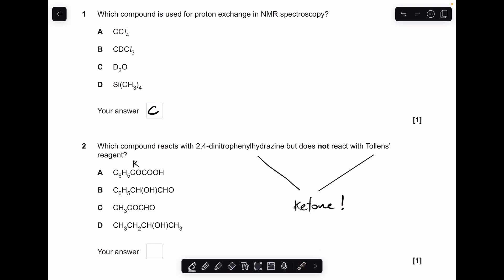So in A we've got a ketone and we've got a carboxylic acid, so that will definitely react with 2,4-DNP and it won't react with Tollens. That's good, that's the answer. We should rule the other ones out just for revision purposes. In B we've got a secondary alcohol and an aldehyde, so that aldehyde group is going to react with 2,4-DNP and with Tollens, so that's why that one's wrong.